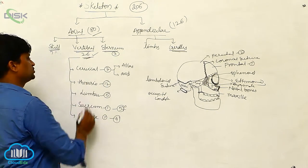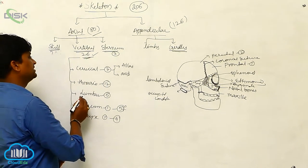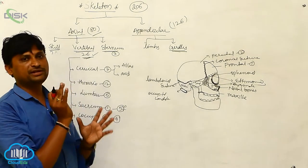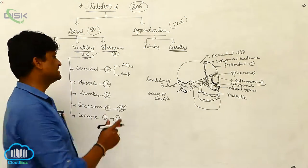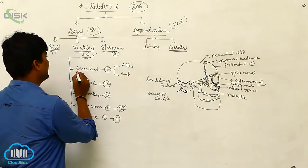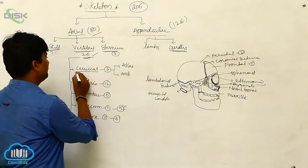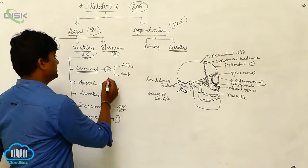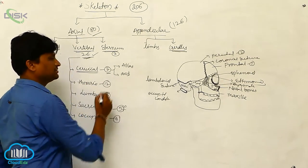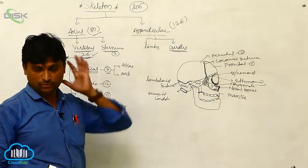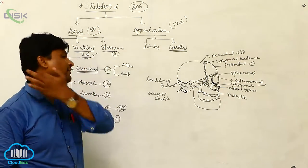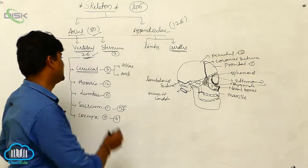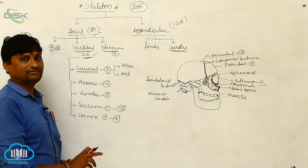These 26 bones are bifurcated based on where they are situated. The first region we consider is the cervical vertebra, which is present in the neck. There are seven bones forming the neck region, which we call cervical vertebra.